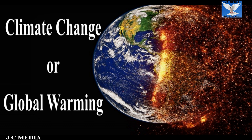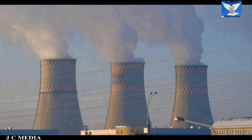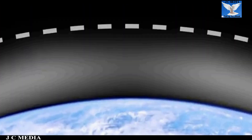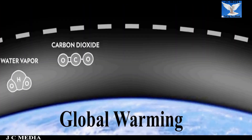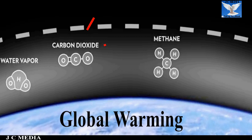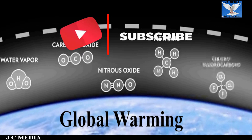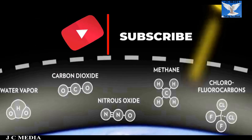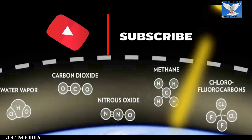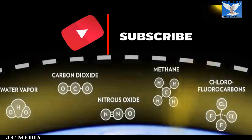Climate change or global warming is disrupting weather patterns, which leads mainly to contamination of water and river water turning salty due to the rise in seas and oceans, hence increasing water scarcity.